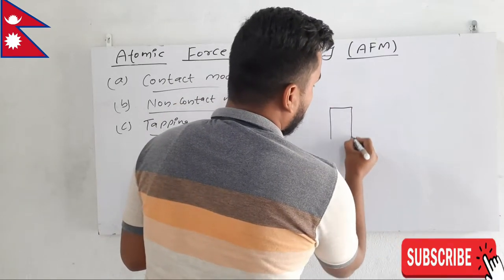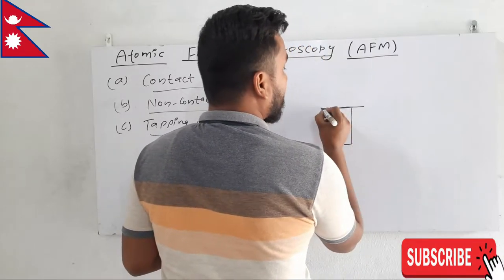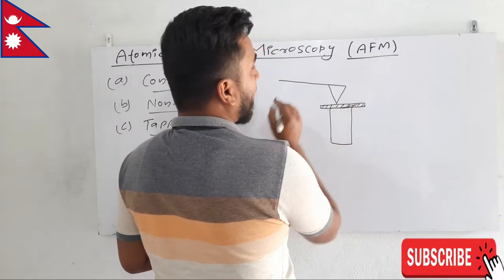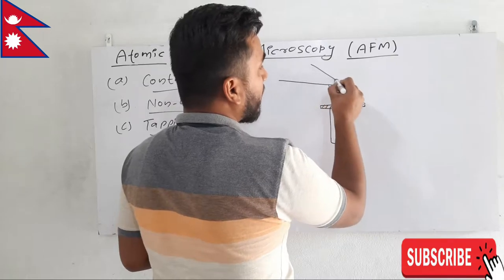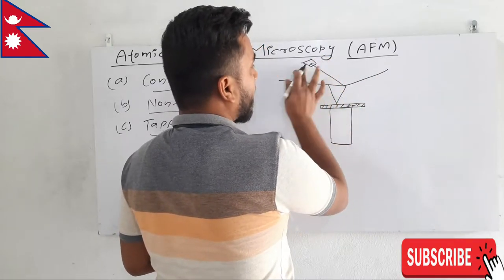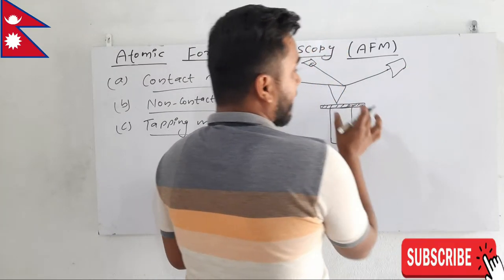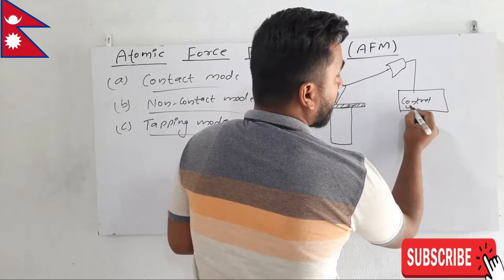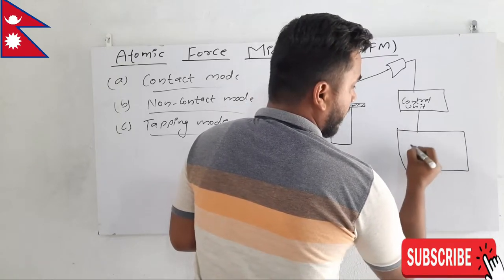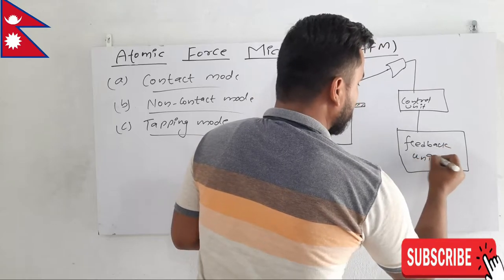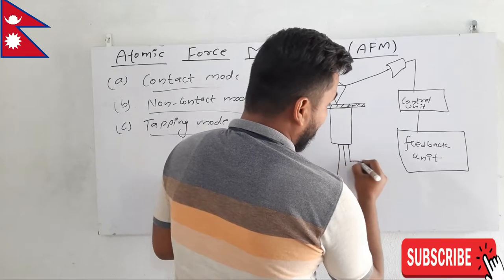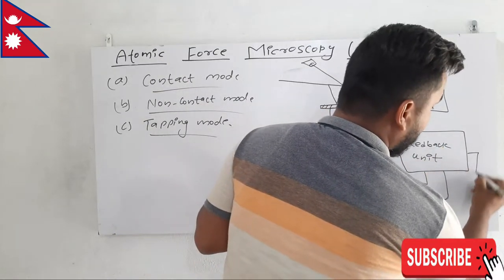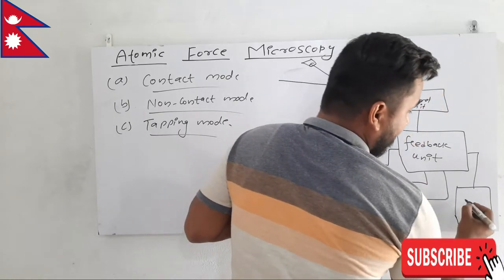First of all, there is a piezoelectric scanner, and the sample is placed on it. There is the cantilever, and the movement of the cantilever is observed by a laser light. The signal from the laser is detected by a photo detector, which is transmitted to a control unit and then to a feedback unit. From the piezoelectric scanner, three electrodes come out and connect to the feedback unit, and from the feedback unit the result is transferred to the display unit.